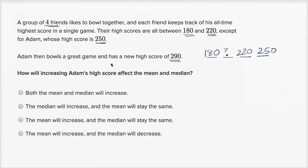Now, after Adam bowls a great new game and has a new high score of 290, what does the data set look like? Well, this guy's high score hasn't changed. This guy's high score hasn't changed. This guy's high score hasn't changed. But now Adam has a new high score. Instead of 250, it is now 290.